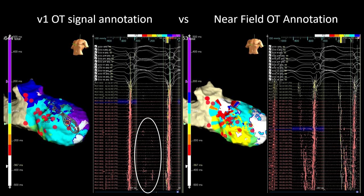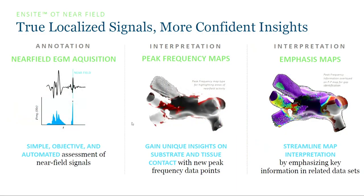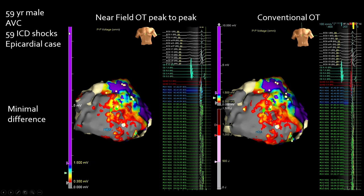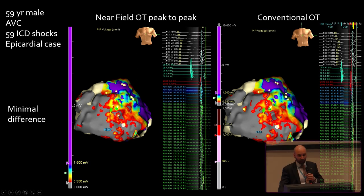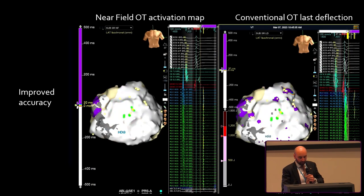The new InsideX system with version 2 upgrade enables more accurate targeting of near-field signals because signal annotation is based on peak frequency. With the old version 1 software, mid-diastolic potentials were not labeled because the sub-interval was focused around the high-energy signal. With the version 2 upgrade, near-field signals—which have a higher peak frequency—are now annotated correctly. Peak frequency maps and emphasis maps can be generated.